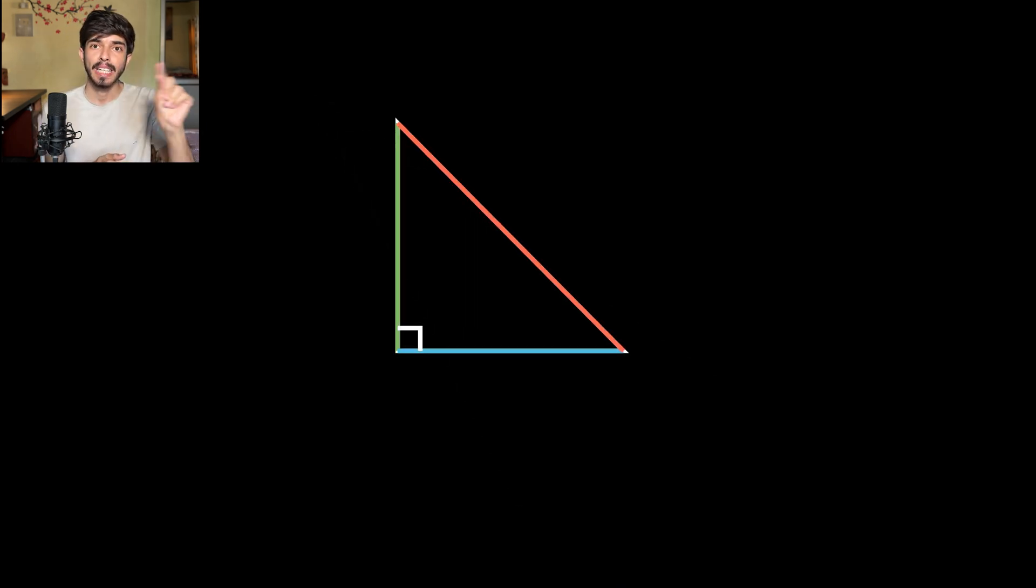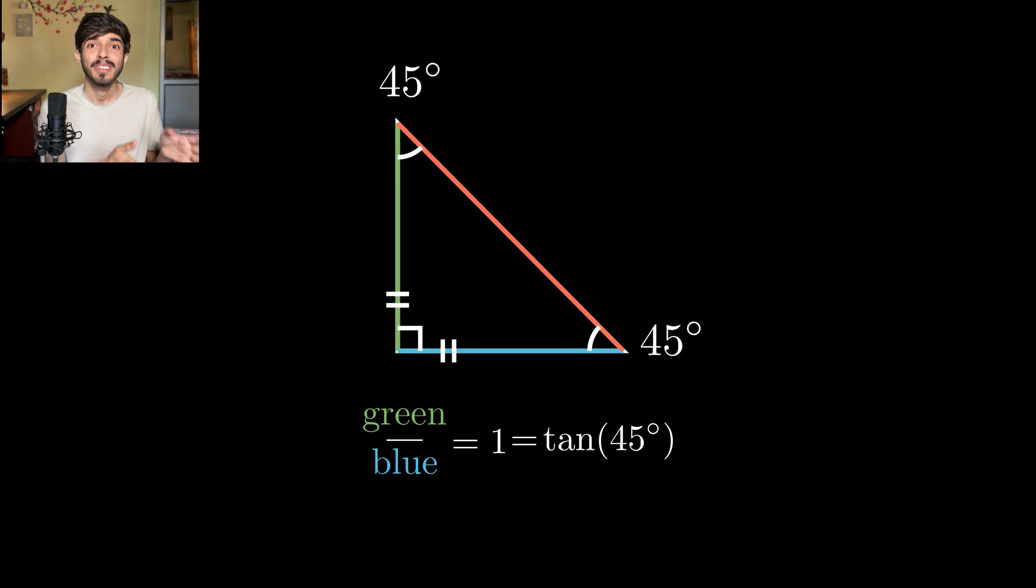So now, one angle is fixed to 90 degrees. Let us fix the other angle, let us say for now 45 degrees. Now, one is 90 degree, the other is 45 degrees. Now the third one needs to be 45 degrees to keep this sum 180 degrees. Now having these two angles 45 degrees makes it an isosceles triangle. Now can you tell me what would happen if I divide this side by this side? Now if your answer is 1, then congratulations. You just told me the value of tan 45 degrees.